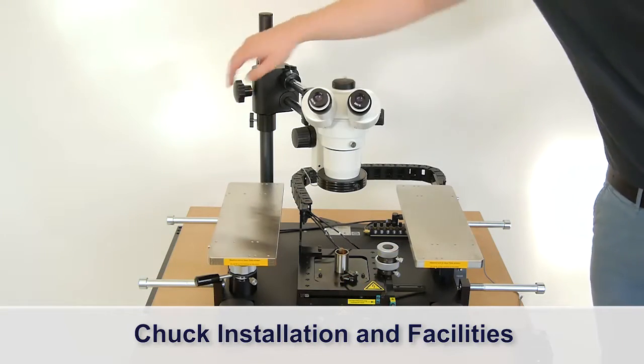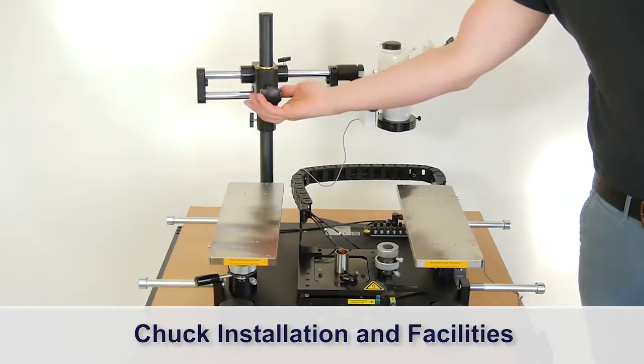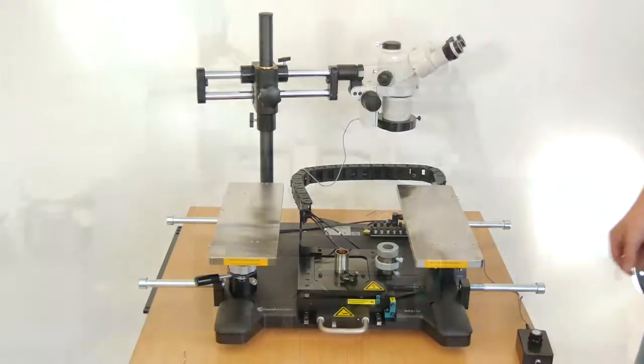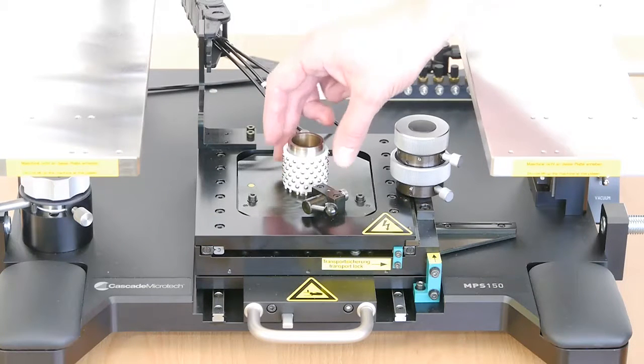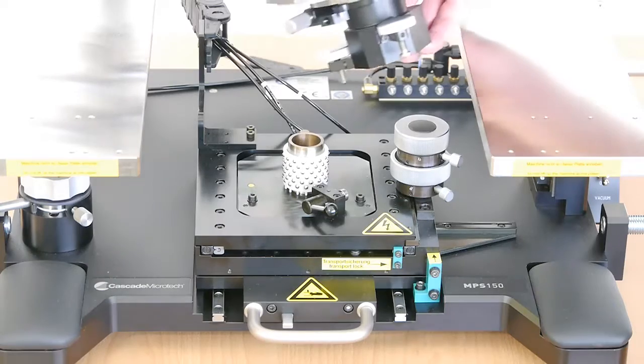For getting access to the chuck stage, turn the crossarm to the side. Take the ball bearing cage and put it over the chuck stage post. Now you can insert the chuck assembly.